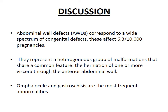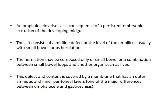Discussion: Abdominal wall defects correspond to a wide spectrum of congenital defects, affecting 6.3 out of 10,000 pregnancies. They represent a heterogeneous group of malformations that share a common feature: the herniation of one or more viscera through the anterior abdominal wall. Omphalocele and gastroschisis are the most frequent abnormalities.